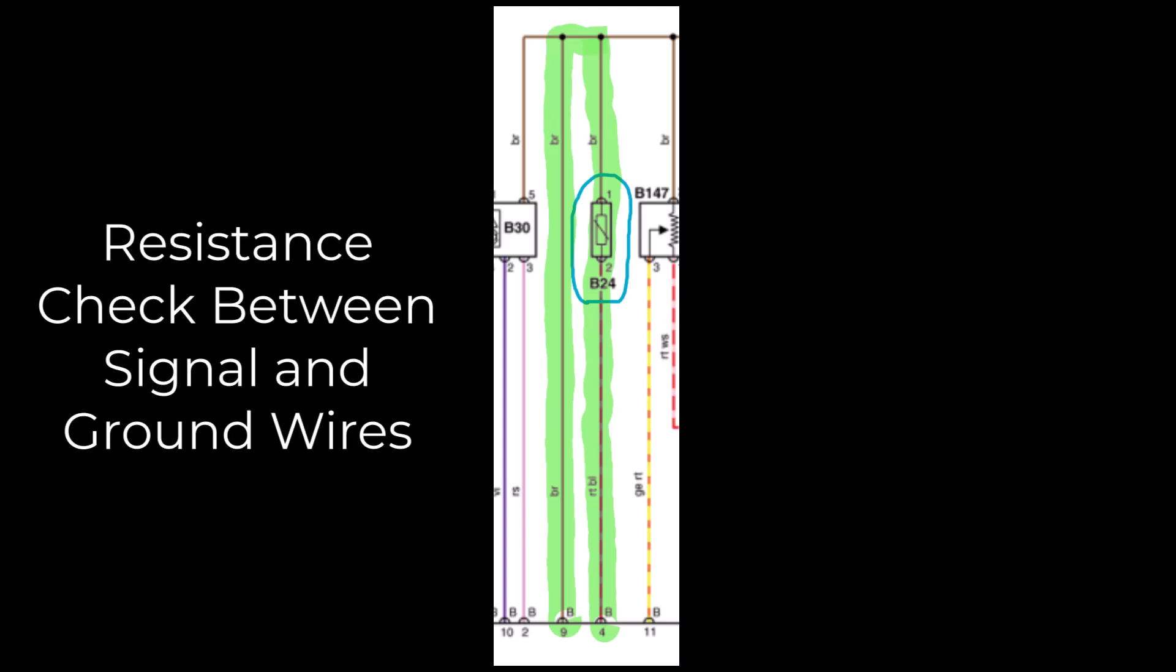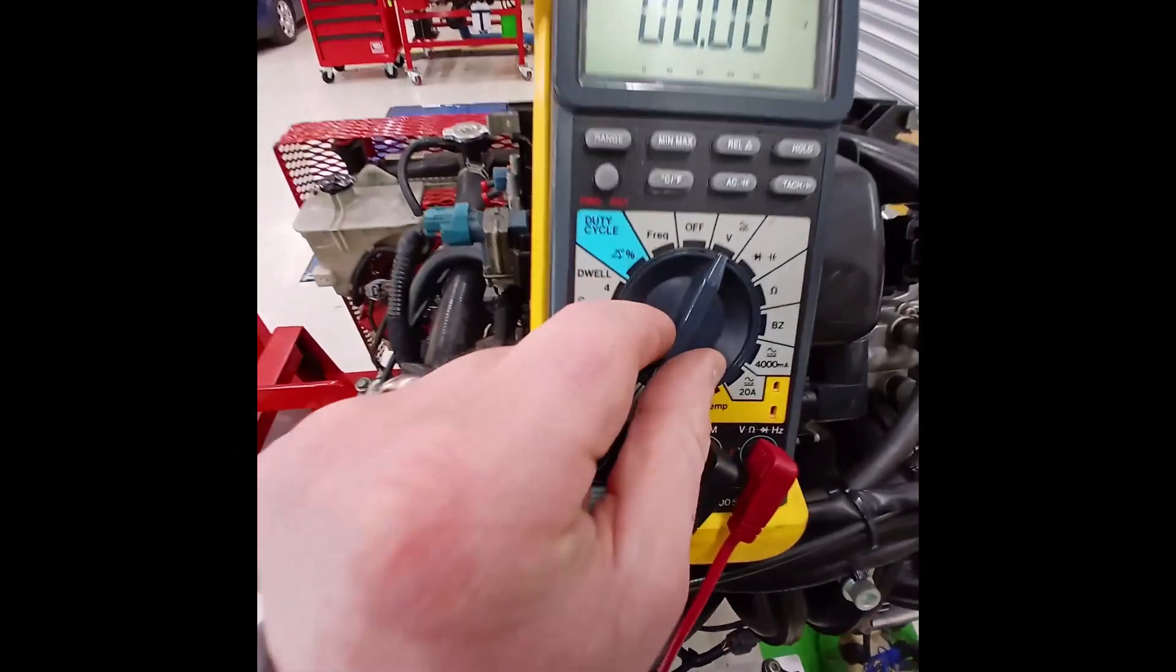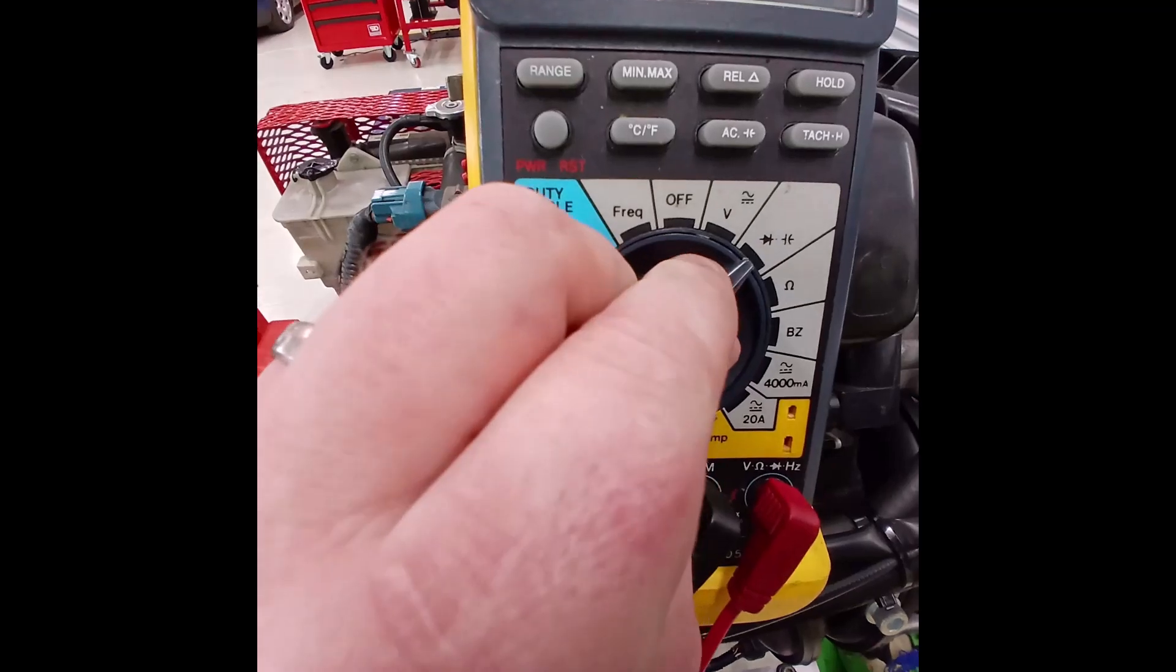Next, we are going to check the resistance between B9 and B4 with the circuit isolated. This means plugging out the engine ECU.